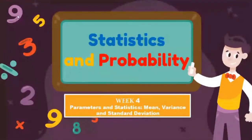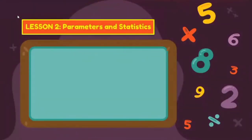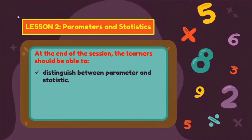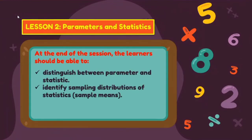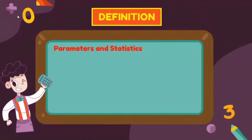Good day everyone. This is senior high school Statistics and Probability, Week 4: Parameters and Statistics — mean, variance, and standard deviation. For Lesson 2, Parameters and Statistics, at the end of the session learners should be able to distinguish between parameter and statistic, and identify the sampling distribution of statistics and sample means.